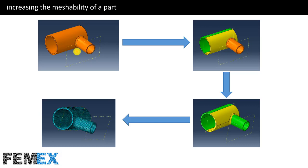We want to create hexahedral elements on this geometry, but at first we cannot do this because Abaqus does not allow us. So I will use partitioning, and after that I can create hexahedral elements on the geometry. Partitioning increases the meshability of the geometry and helps us create hexahedral elements on sophisticated geometries.